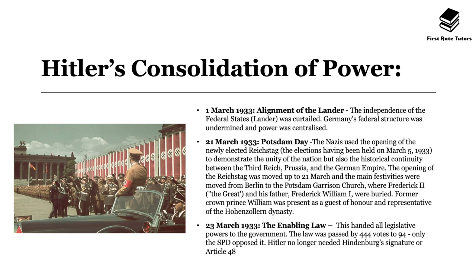On 1st March 1933, there was the alignment of the Lander. The independence of the federal states, which were known as the Lander, were curtailed and Germany's federal structure was undermined and power was centralised to Hitler and the Nazi party.